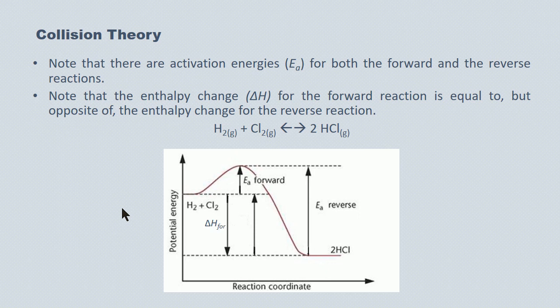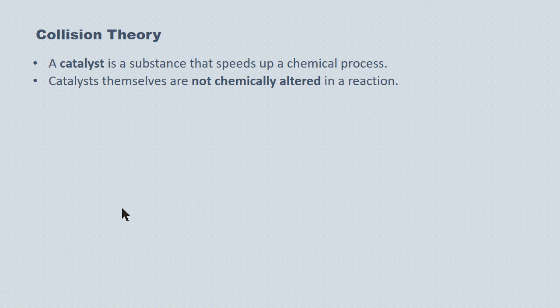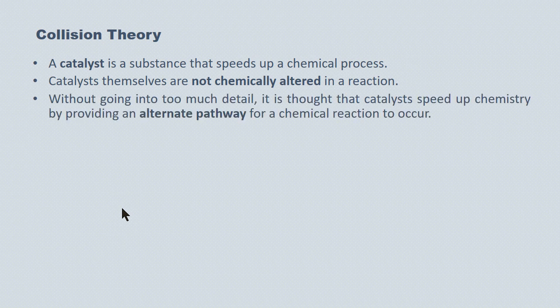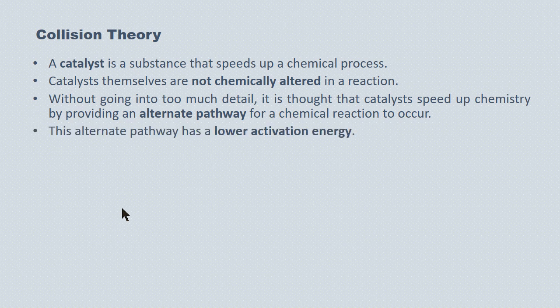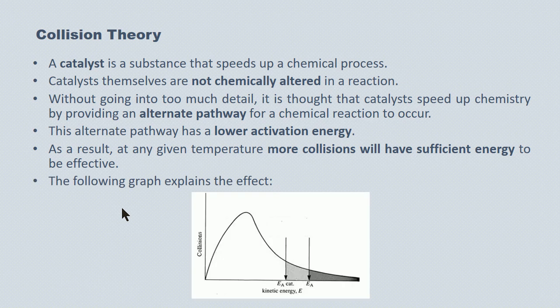Here's a second look at the potential energy curve. A catalyst is a substance that speeds up a chemical process. Catalysts themselves are not chemically altered in the reaction — that's something to remember. Without going into too much detail, because the chemistry of catalysts is extremely complex, catalysts are thought to speed up chemistry by providing an alternative pathway for the chemical reaction to occur, and that alternative pathway will have a lower activation energy requirement. Because the energy requirement is lower, you require a much lower energy input for the reaction to take place, and at any given temperature more collisions will have sufficient energy to be effective.